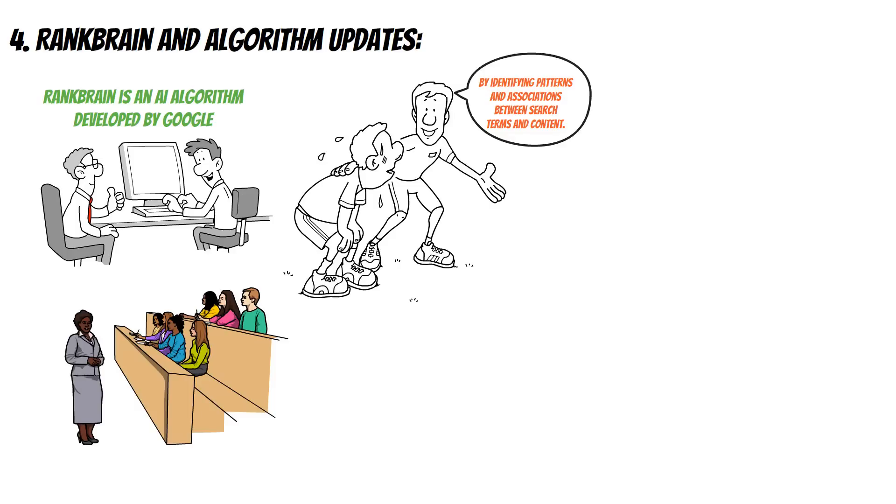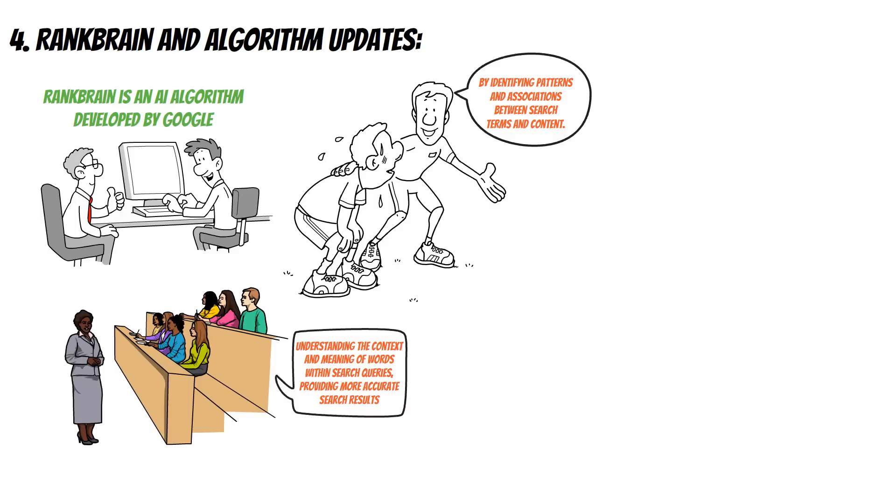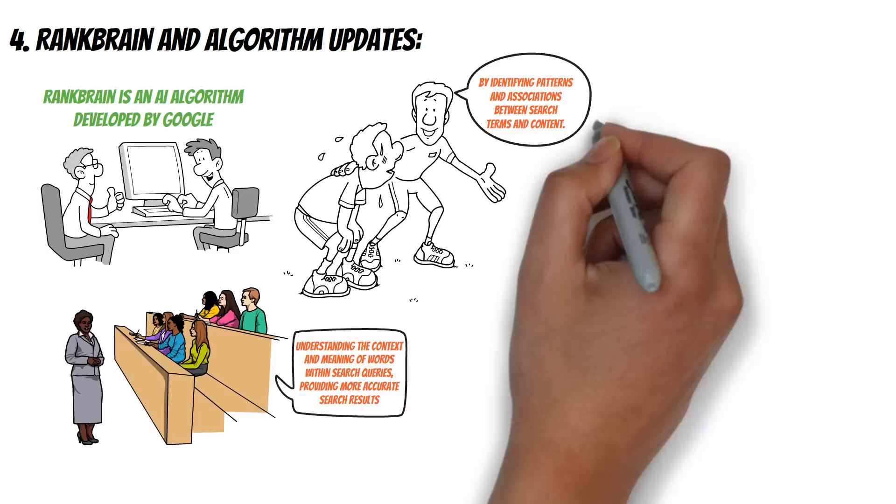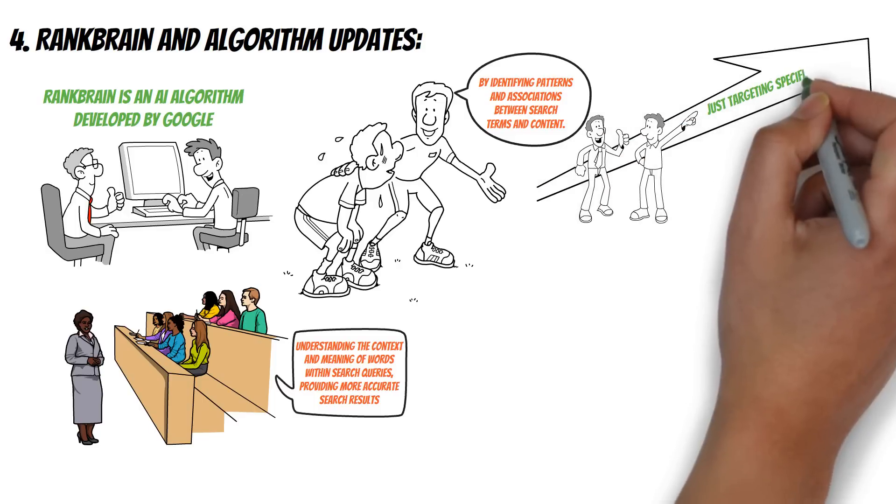Additionally, AI-driven algorithm updates such as Google's BERT, Bidirectional Encoder Representations from Transformers, have improved search engine optimization. BERT focuses on understanding the context and meaning of words within search queries, providing more accurate search results. SEO professionals now need to create content that aligns with the user's intent and context, rather than just targeting specific keywords.